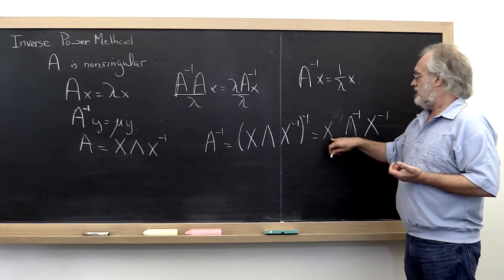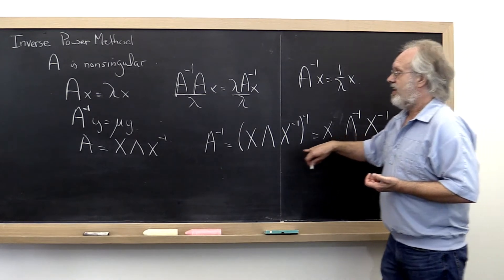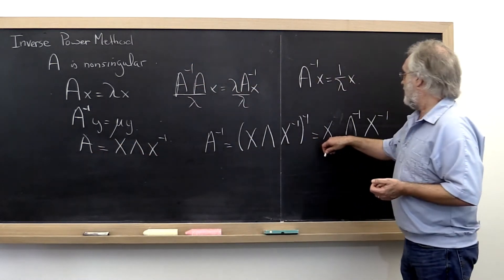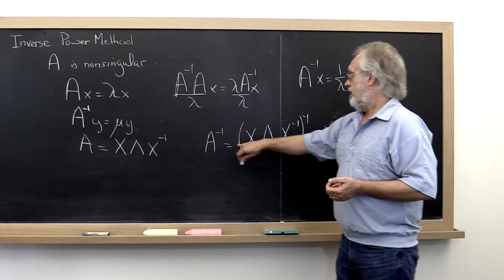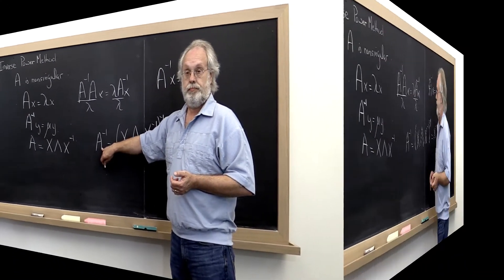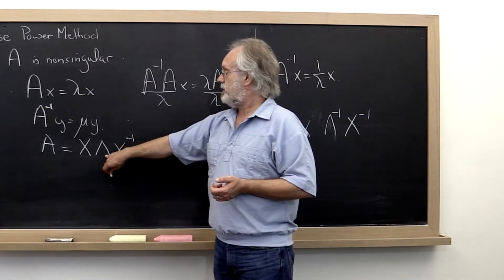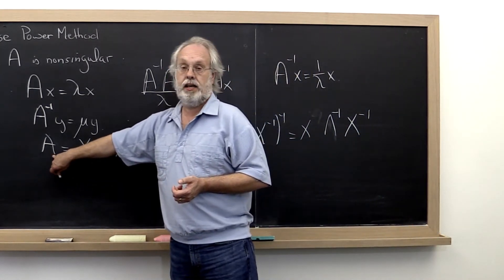So what we notice is that the same x that diagonalizes A is the x that diagonalizes A inverse. The lambda that shows up over here is just the inverse of the lambda that showed up when we diagonalized A.